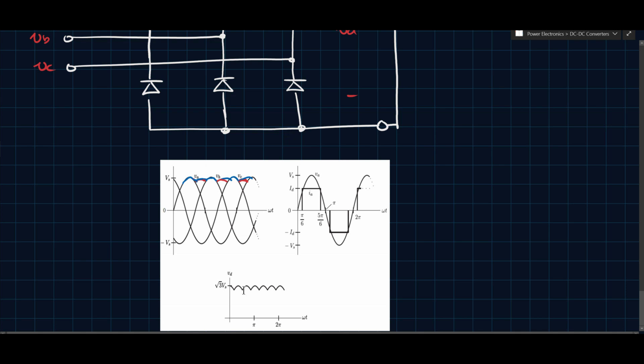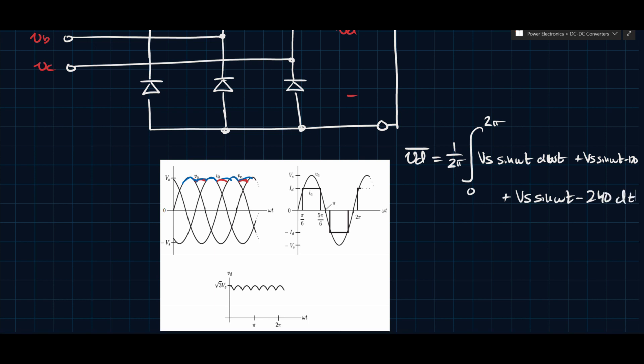You can calculate this, because you can add the three phases together, the three phase waveforms. So you can say VD average would equal 1 over 2 pi, and then you would have VS sine omega t, well, this would be the integral. So you'd have to integrate 0 to 2 pi VS sine omega t d omega t, plus VS sine omega t minus 120 d omega t, plus VS sine omega t minus 240 d omega t, and then you can do all of that, and you'll get the average.